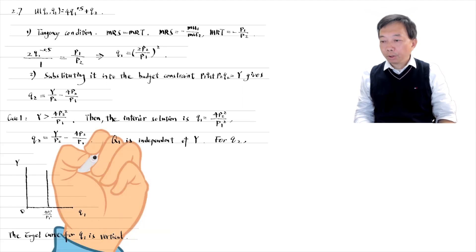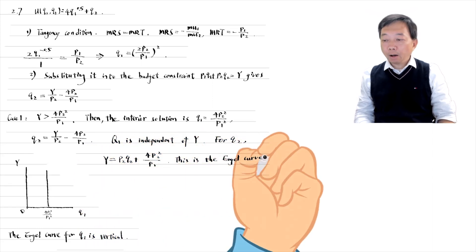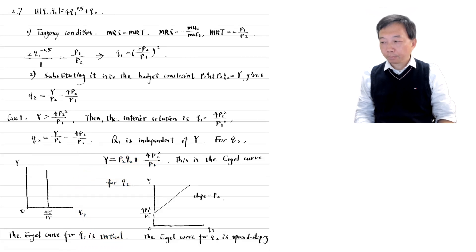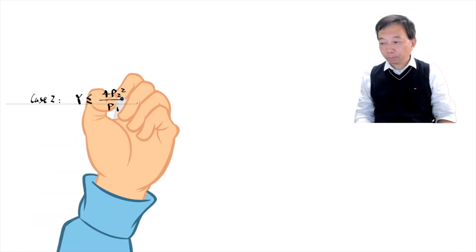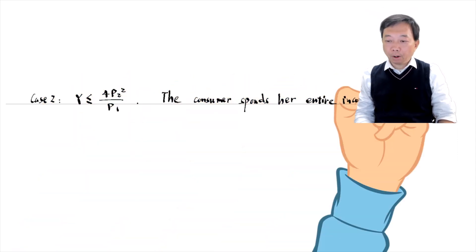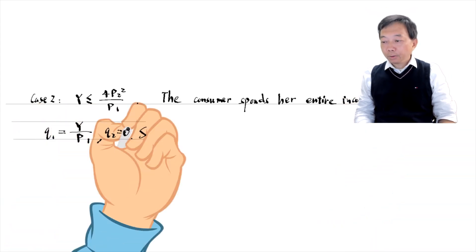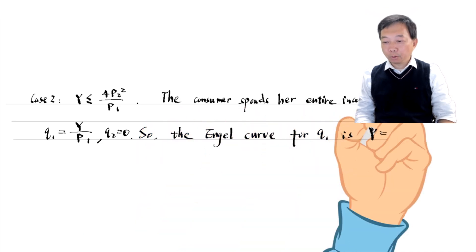For Q2, we can get the function for the Engel curve. It is an upward sloping straight line with a slope of P2. Next, we consider another case when income Y is low and we have the corner solution. The consumer spends her entire income on Q1 and purchases no Q2. So the Engel curve for Q1 is an upward sloping straight line with a slope of P1.